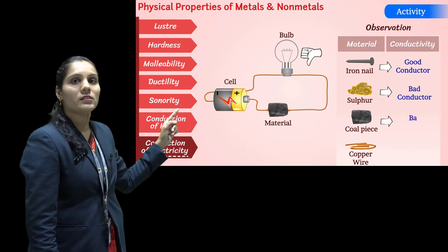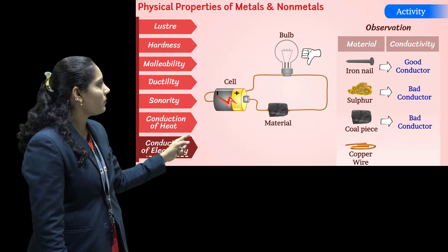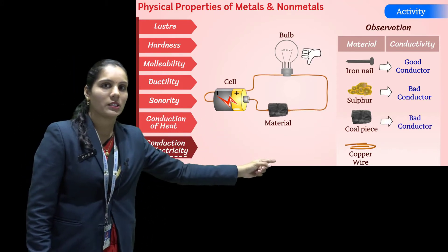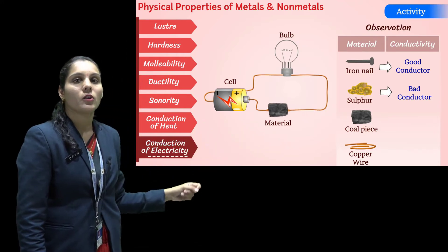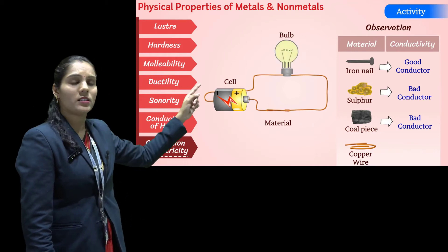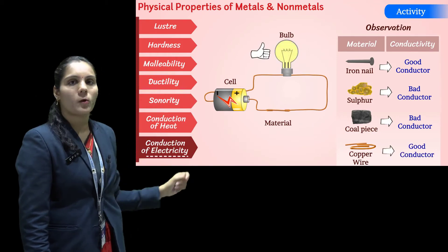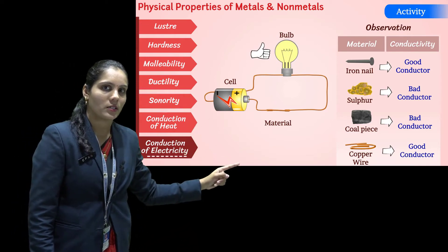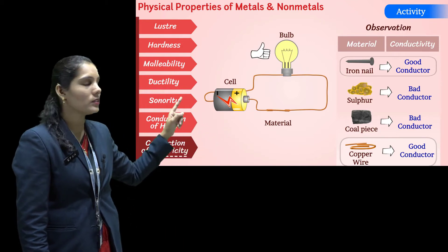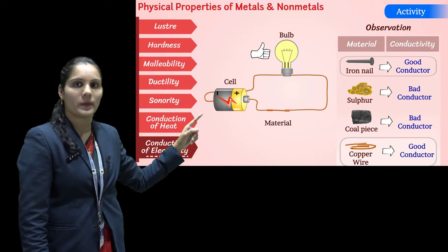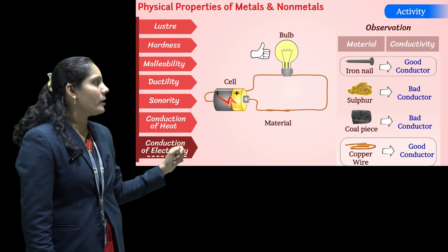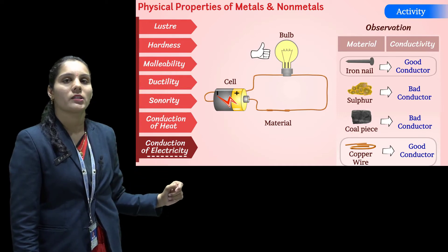Then I put the coal piece in the electrical circuit — the bulb does not start. That means coal is a bad conductor of electricity. And then the last one, copper wire — when I put the copper wire in the circuit, the bulb starts. So copper wire is a good conductor of electricity. From this activity we can understand: metals are good conductors of electricity and non-metals are bad conductors of electricity.